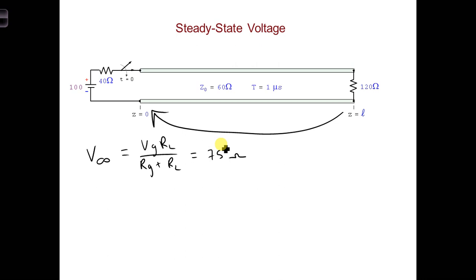We see that the transmission line's characteristic impedance, Z naught, has no effect on the steady-state current. Then the steady-state current is exactly what we obtained from Ohm's law for the 120 ohm load resistor connected directly at z equals zero.